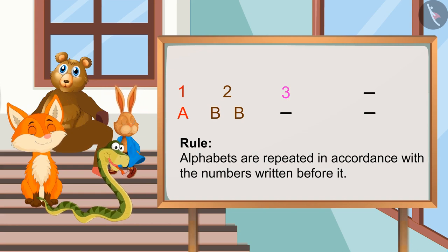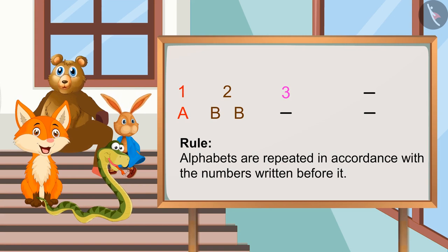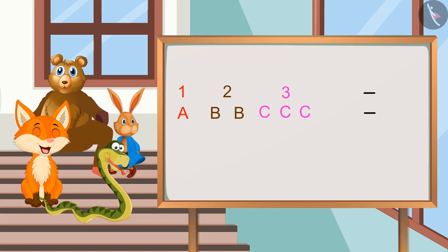Absolutely right, Kamini. So, according to this rule, in the first blank, we will write C for 3 times.